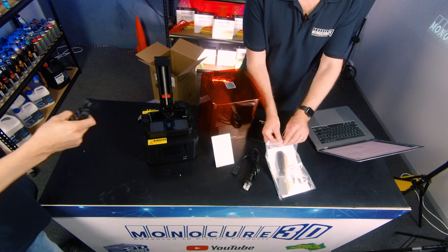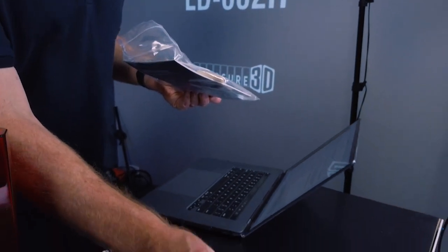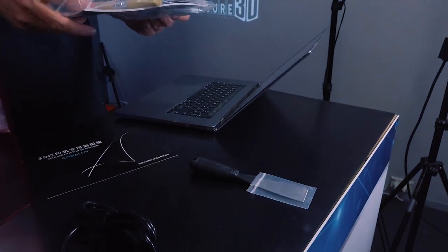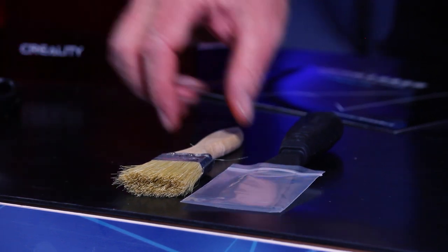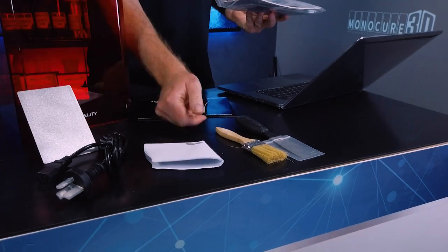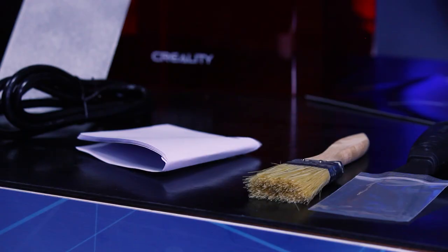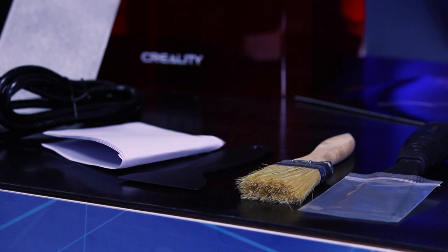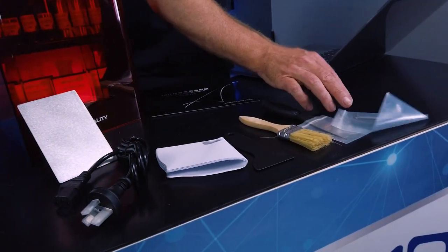So a quick look to see what we get inside the package. The metal scraper we all know not to put that inside the vat but it's fine for the build plate. Paintbrushes always come in handy for removal of the excess resin with the resin away. We always love getting the filters. The plastic scraper, that's the one for inside the vat so we don't damage it.